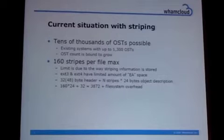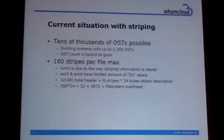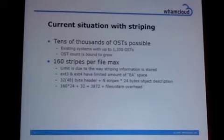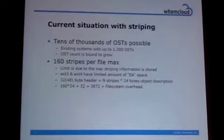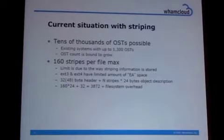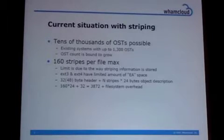The storage itself is pretty sparse: it's 32 bytes header plus 24 bytes for each stripe description, which includes the OST index number, the object ID, and so on. So 160 times 24 plus 32 gives us about 3,872 bytes, which is already close to the block size, and there's some overhead to store the attribute names. It's generally a good idea to allow some space for other extended attributes.